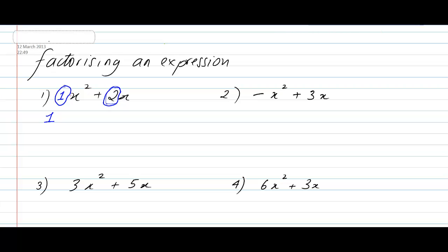Next, look at the letters. Here I've got x squared and here I have an x. The trick is to figure out which letter has the lowest power. This one has a power of 2, and the other one — in algebra, whenever you've got a letter on its own, the power is always 1. So the letter with the lowest power is x to the power of 1, and I'm going to take x to the power of 1 as my lowest factor.